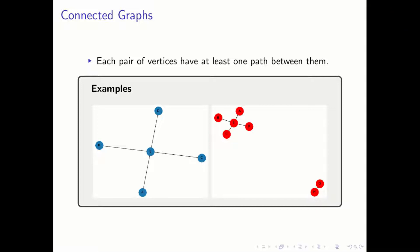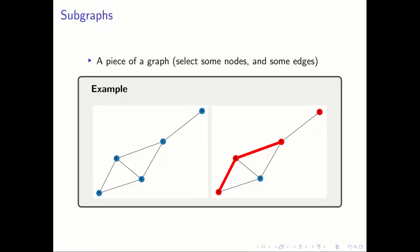Connected graphs have the property that each pair of vertices, adjacent or not, have at least one path between them. In the examples below, the left graph is connected, but the right graph is not connected.